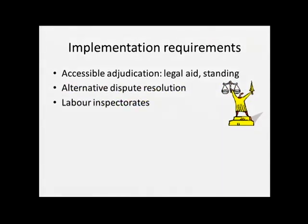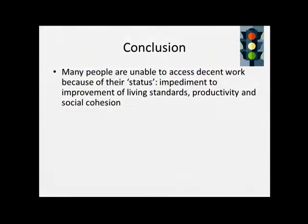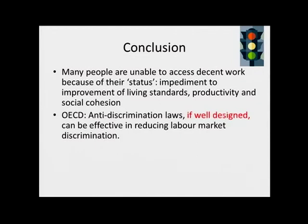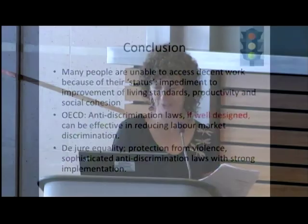The bottom line is that legislation needs to be comprehensive — it needs to address all workers and all employers to avoid that incentive. Finally, we need accessible adjudication, alternative dispute resolution, and labor inspectors who are properly resourced. In many of these countries we have very little of these. If we want to really address discrimination through law, we need to get rid of de jure prohibitions, we need protection from violence, and we need sophisticated anti-discrimination laws with strong implementation. Thank you.